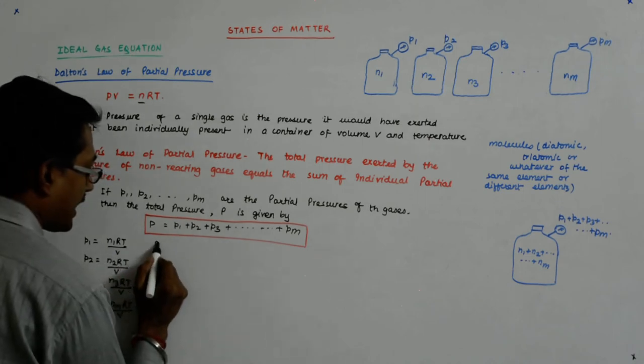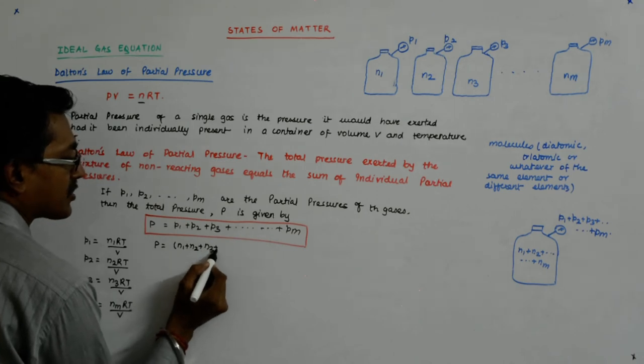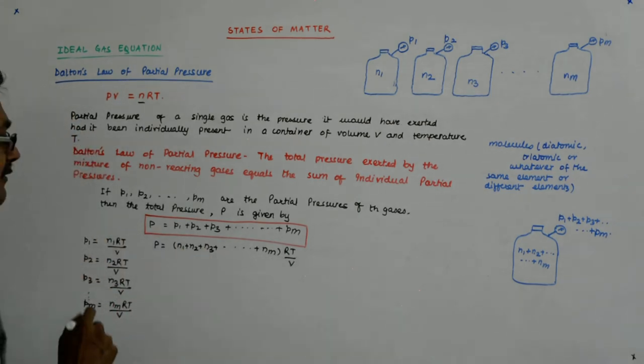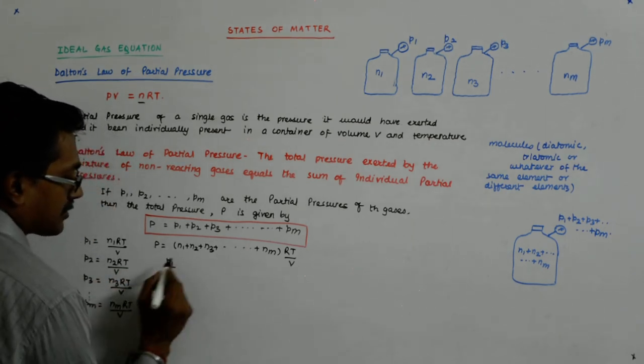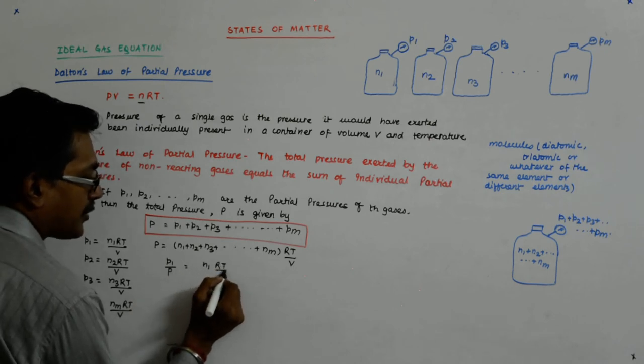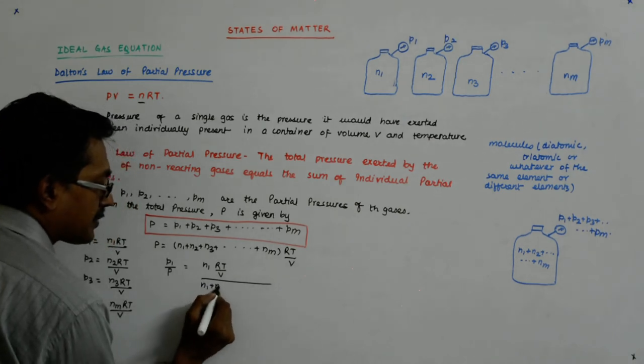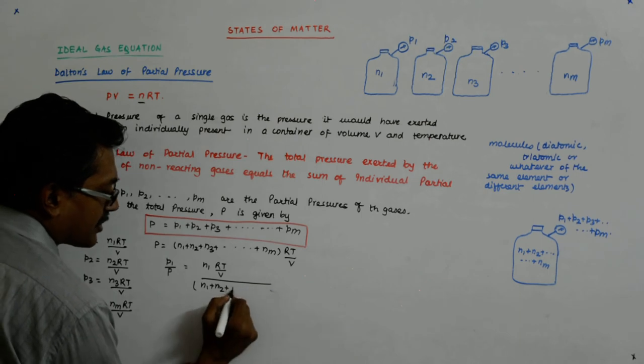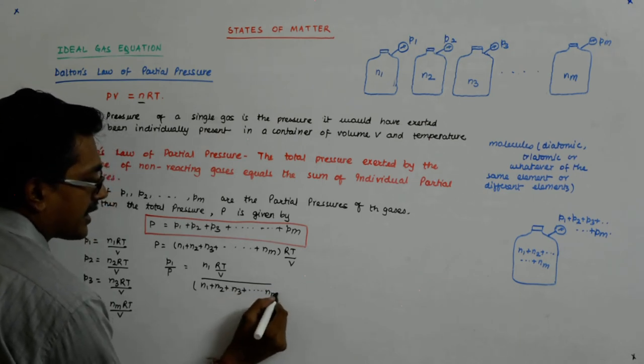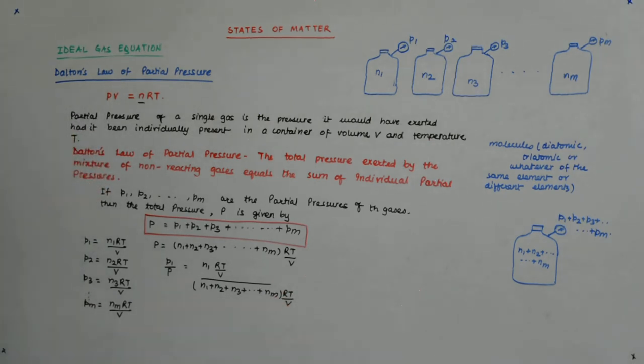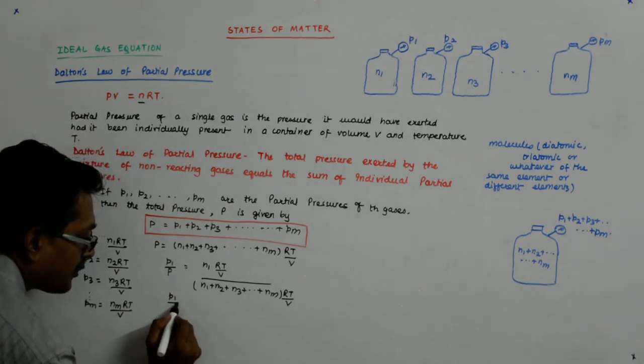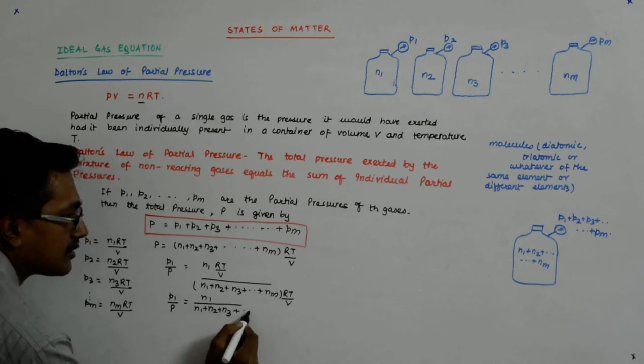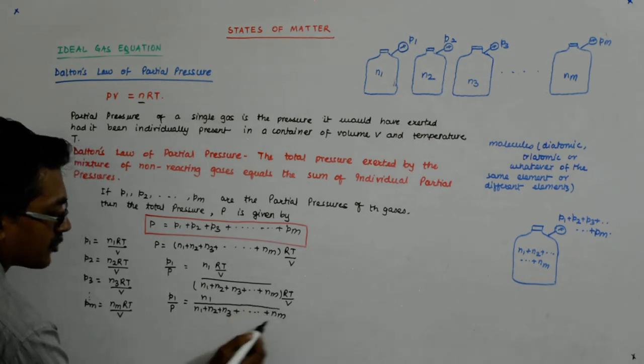And we also know that P equals N1 plus N2 plus N3 plus Nm, RT upon V. Now, what happens if I divide P1 and P? So P1 upon P gives me N1RT upon V divided by N1 plus N2 plus Nm RT upon V. Now, what does that give you? It gives you that P1 upon P equals N1 upon N1 plus N2 plus N3 plus Nm. Is it not?